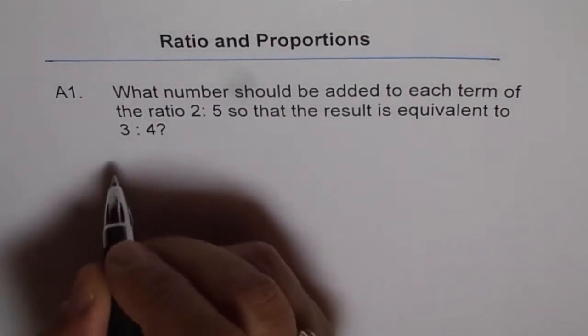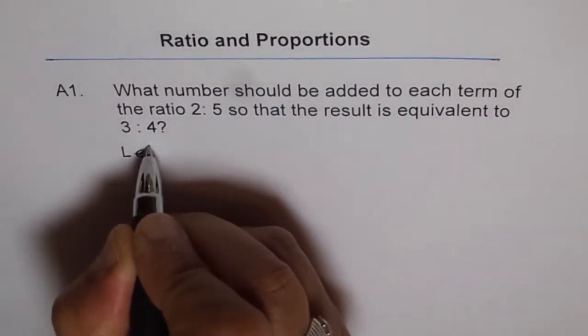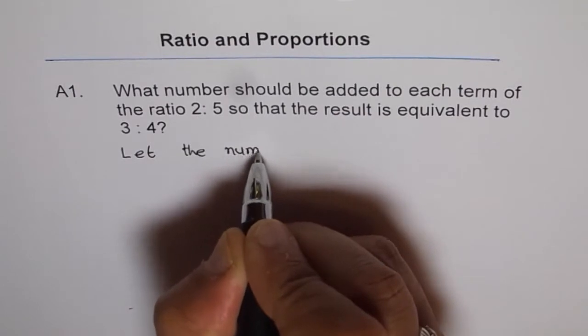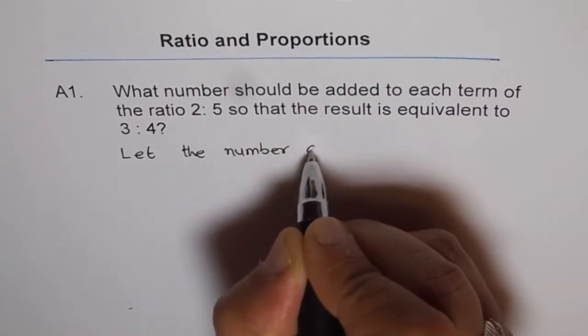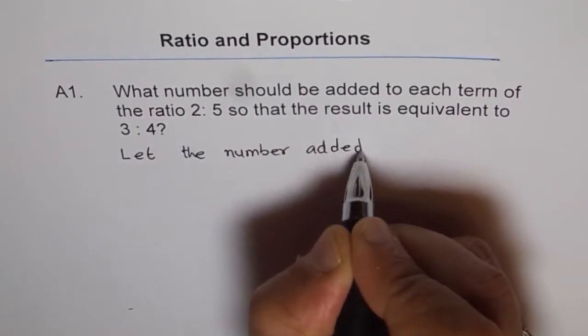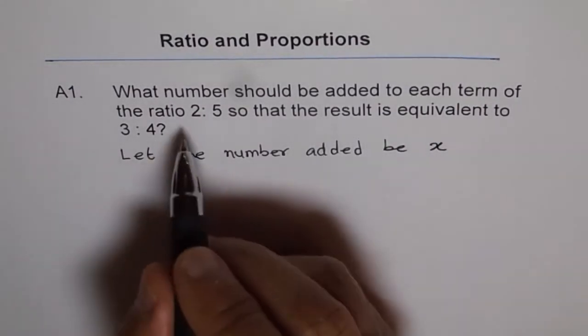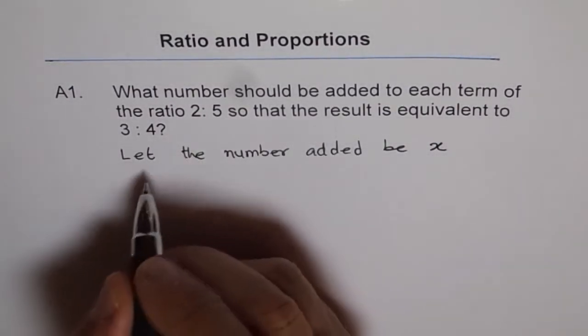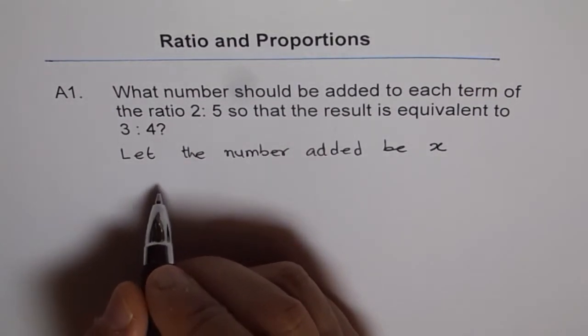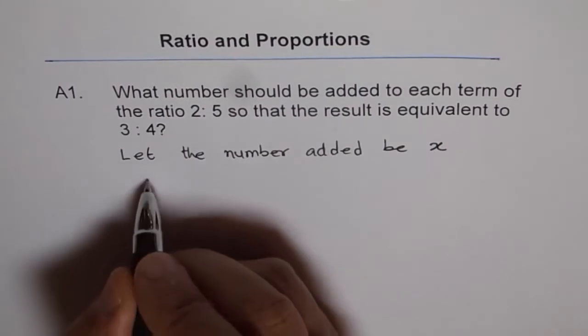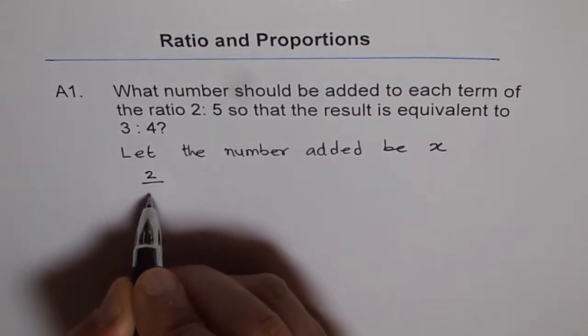So, let the number added be x. Then, if we have a ratio of 2 to 5, we have some ratio which is 2 over 5. So, the ratio was 2 over 5. Now, what we did was, in this ratio, we added same number x.